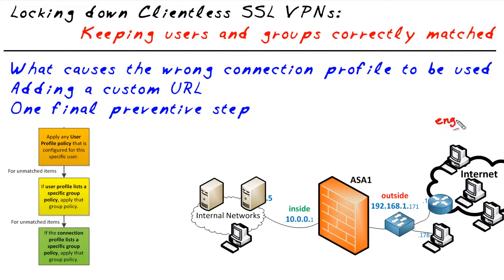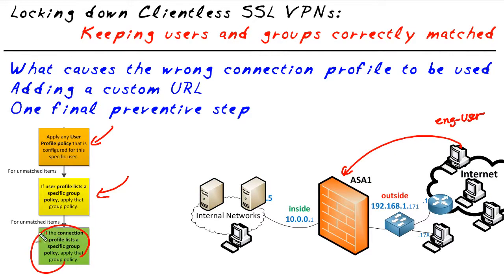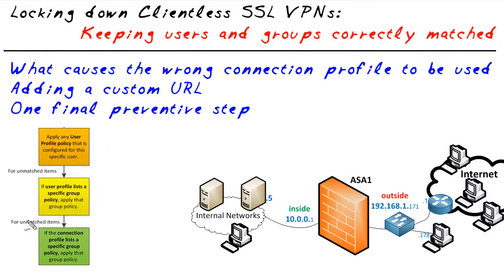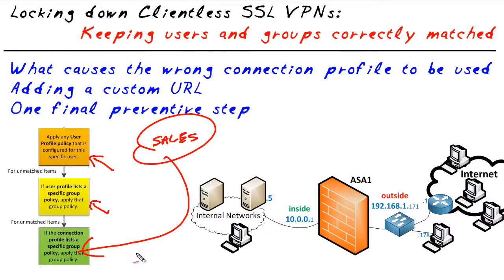Let's set the stage. We've got a user called engineering-user. On a good day, that user selects the correct connection profile, authenticates, and gets the policy from their user account and from their group. Because they came in on the right connection profile, everything lines up. Unfortunately, if it doesn't go well, the user comes in on the sales connection profile — they still get their user profile and engineering group policy, but any unassigned attributes are now going to come from the sales group, which is not our intended purpose.